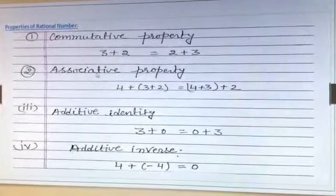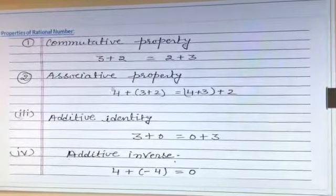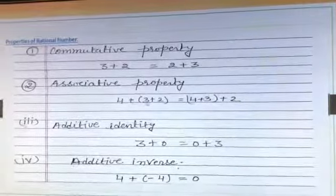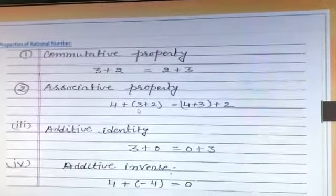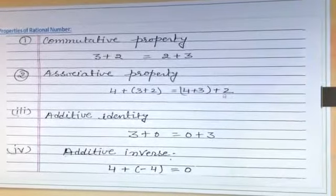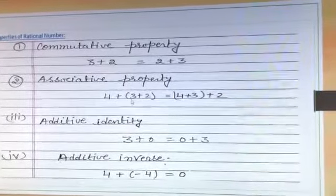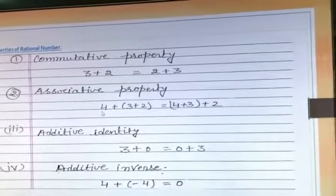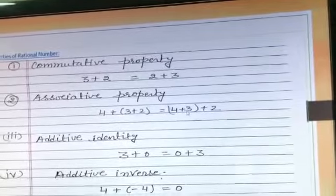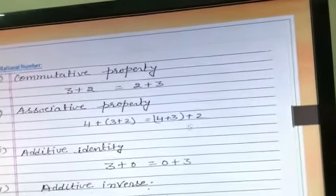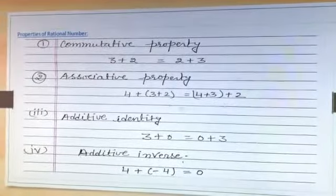The second property is associative property. In associative property, we take 3 numbers. Whenever we write 3 numbers in any order, the answer will be the same. Like 4 plus 3 plus 2: first 4 plus 3 is 7, then 7 plus 2 is 9. Or we can group as 3 plus 2 equals 5, then 5 plus 4 is 9. So both sides are the same.